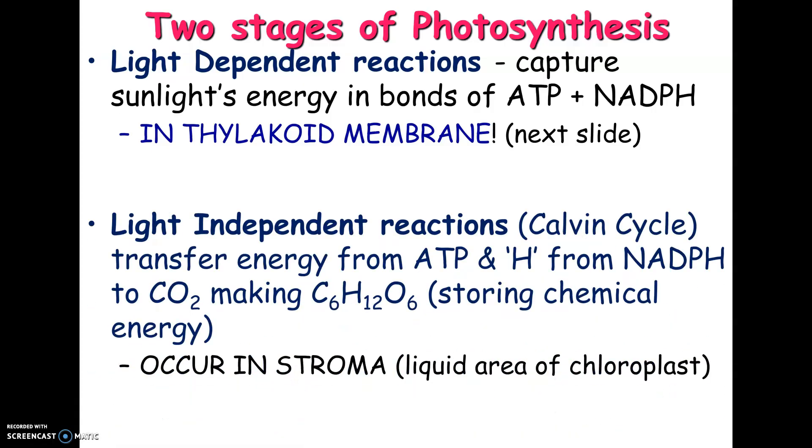The light-independent reaction used to be called the dark reactions. Or the Calvin cycle is going to transfer the energy that was captured in the light reaction. So the ATP and the H from the NADPH. And combine that with carbon dioxide, and we're going to end up with sugars. So the hydrogens from the NADPH are going to be part of sugar, along with the CO2.